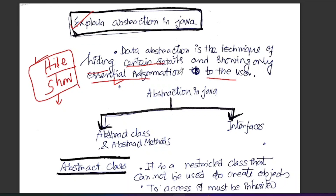So we need to do two steps in Java. Number one is Abstract Class and Abstract Methods. Number two is Interface.